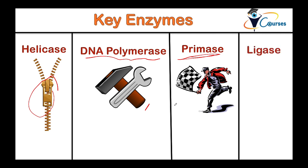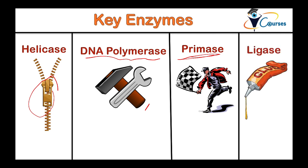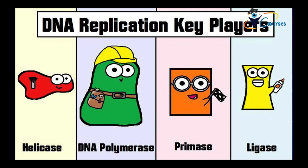Finally, we have the ligase — this is the gluer. It glues the DNA fragments together, sticking them into one piece. So to summarize: we have the helicase, the zipper; the DNA polymerase, the builder; the primase, the initiator; and the ligase, the gluer.